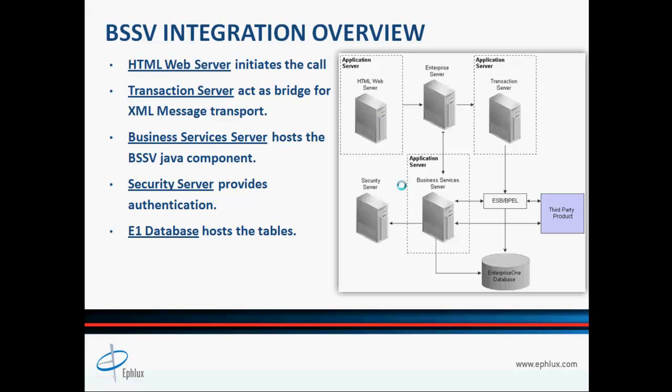Starting with the overview, you can see a diagram that describes a typical scenario for JD Edwards business service integration. It provides all the elements of the puzzle and how they fit together. It usually starts with the HTML web server where a call is initiated from an interactive app. This call usually invokes a business function through the enterprise server, which communicates to a business service through a communication medium based on XML message transport using the transaction server. The business service resides on a business services server, and from there it connects with the external third-party service provider, either using Oracle Enterprise Service Bus or Business Process Execution Language (BPEL).